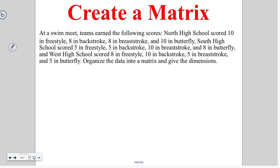Part of what you also will have to do is to create the matrix yourself, so at a swim meet, the teams earn the following scores. North has ten in freestyle, eight in backstroke, eight in breaststroke, and ten in butterfly. South has five in freestyle, five in backstroke, ten in breaststroke, and eight in butterfly. And West has eight in freestyle, ten in backstroke, five in breaststroke, and five in butterfly. Organize the matrix, and then give the dimensions.